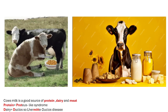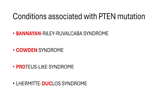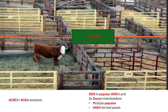For the next two syndromes, cow gives us milk — a rich source of protein, dairy, and meat. Protein stands for Proteus-like Syndrome. The 'D' in dairy is for Duclos, and meat relates to Lhermitte. So dairy and meat give us Lhermitte-Duclos Disease. To recall all conditions associated with PTEN mutation: Bannayan-Riley-Ruvalcaba Syndrome, Cowden Syndrome, Proteus-like Syndrome, and Lhermitte-Duclos Disease.